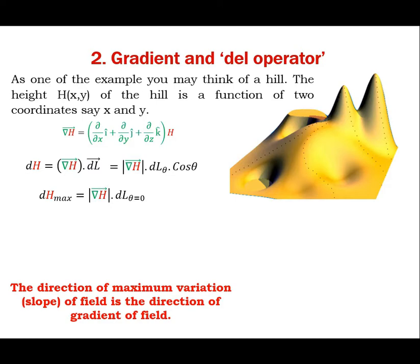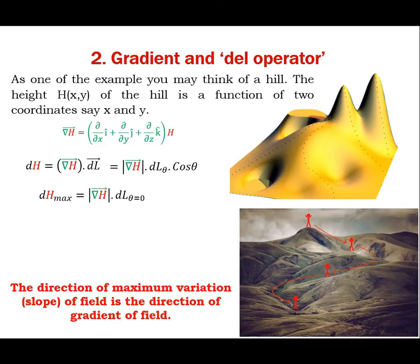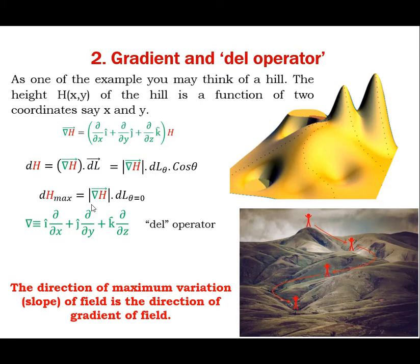Imagine it is raining on the hill. You can notice that the water flows in the path of maximum slope of the hill, or in the direction of gradient of h at each point of its path. This del operator is very interesting as it does have unit vectors along x, y, and z axis, but it has no magnitude. So it cannot be a vector at all, but it is an instruction to be applied on a scalar function or field to provide the gradient of that field. Thus, it is called a vector operator.